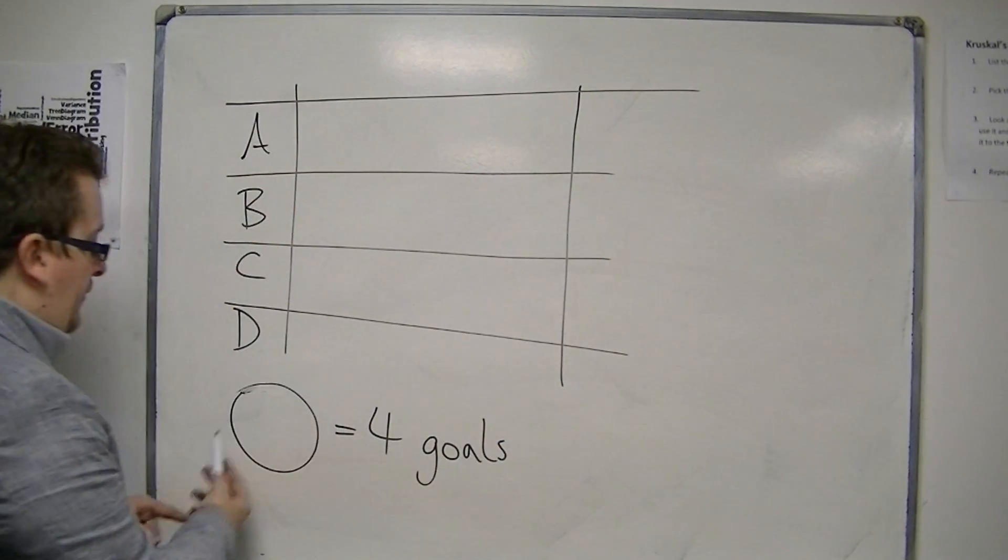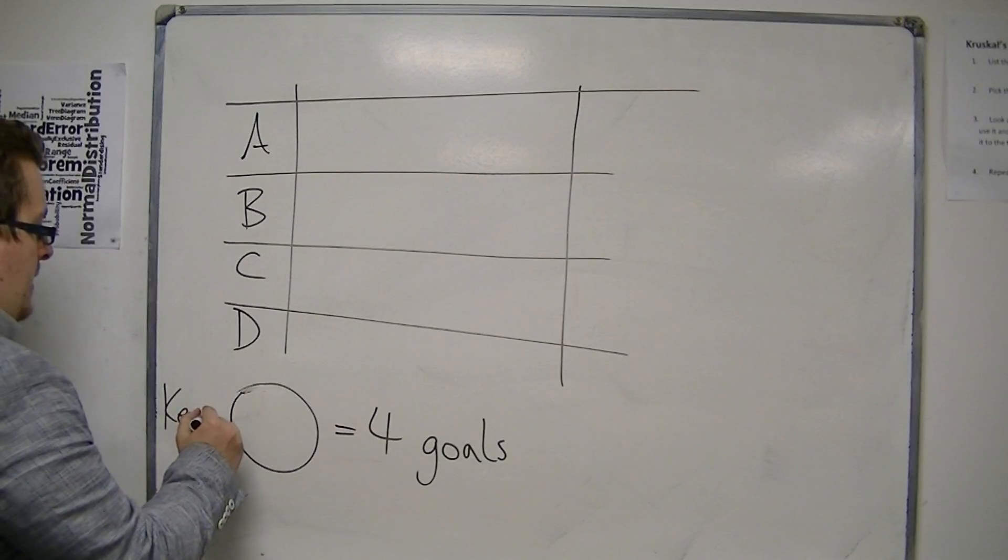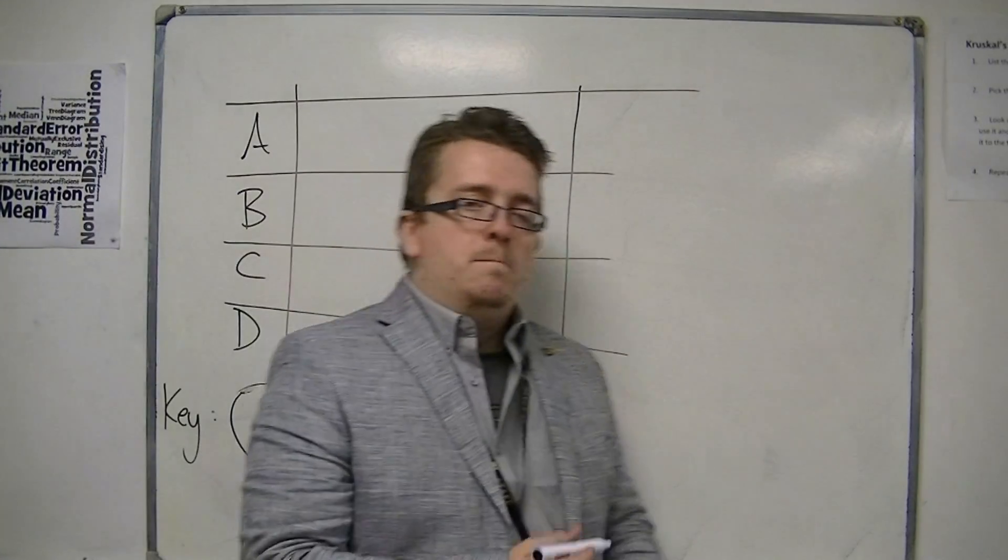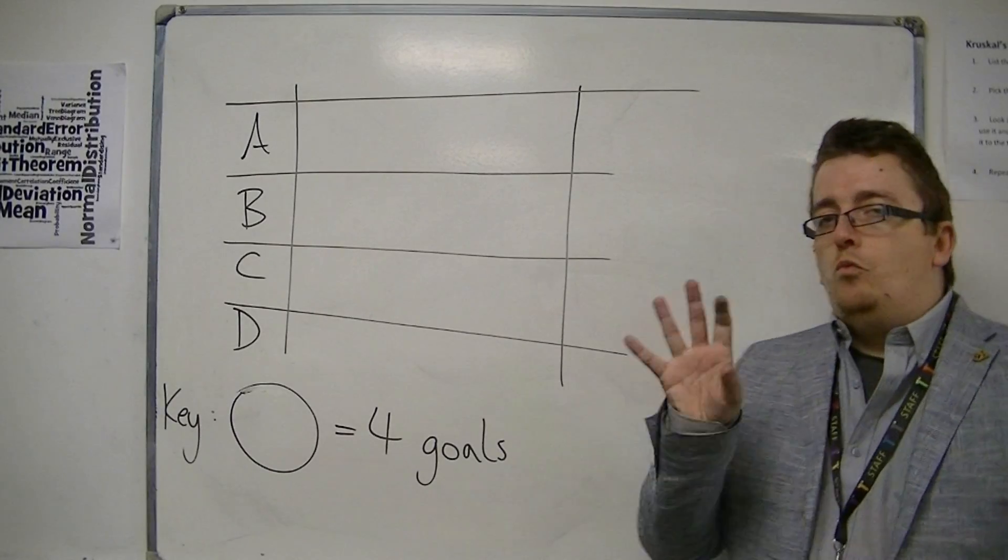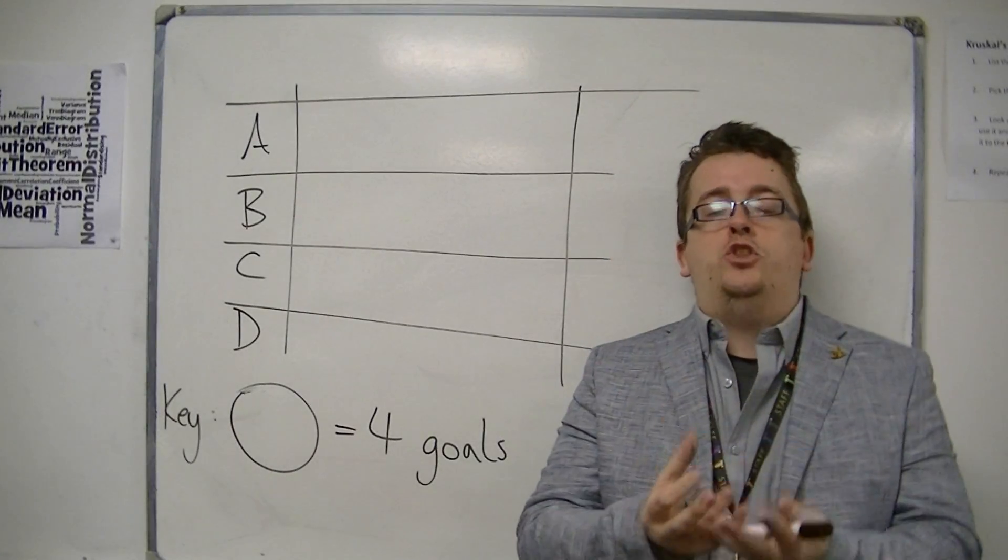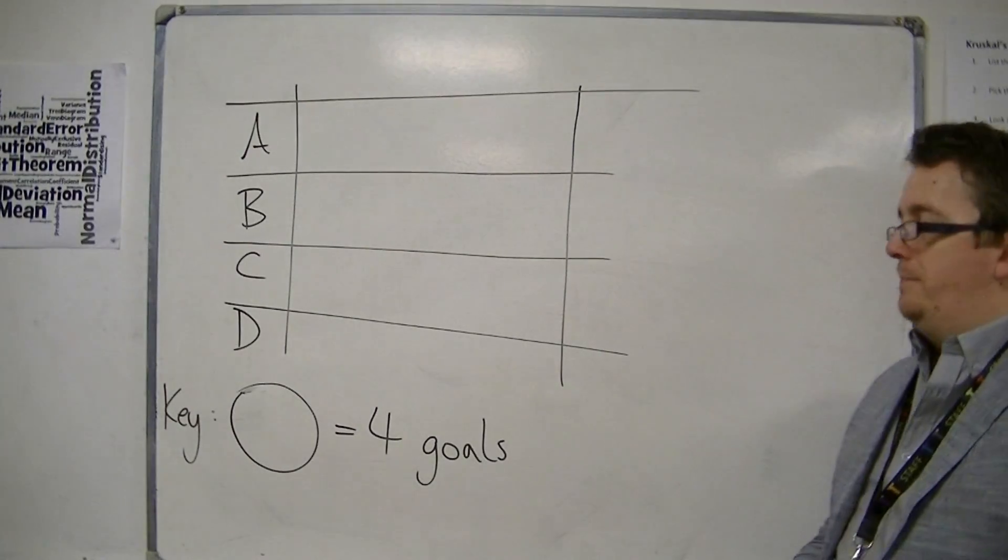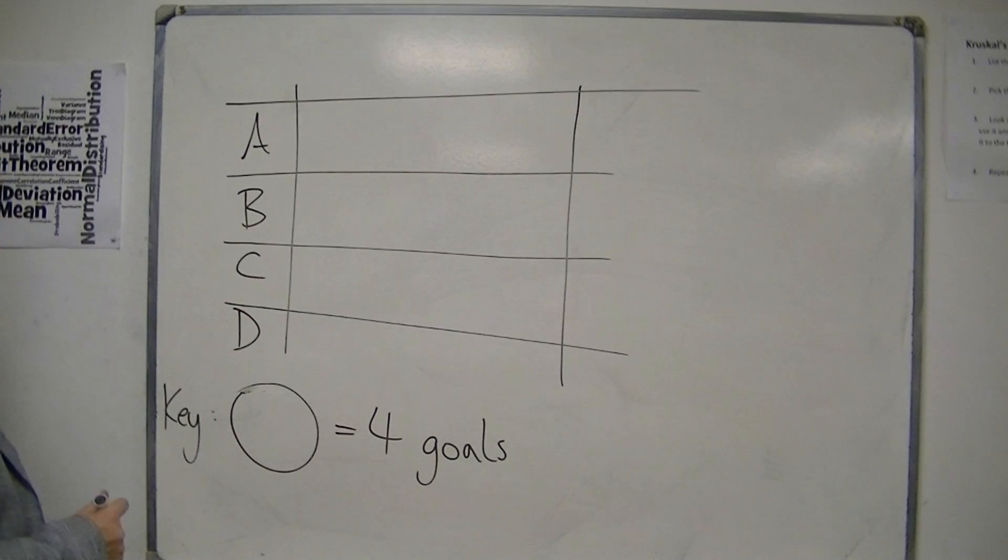So this is what we're going to do as a key. And every pictogram must have a key. It must explain what the symbol that it's using means, what the picture means, hence pictogram. So, the circle represents four goals.